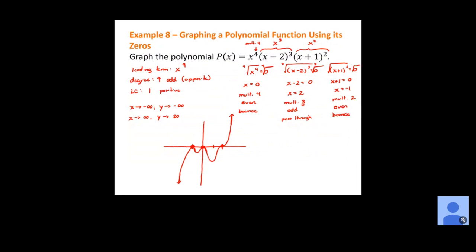In a rough sketch, it doesn't matter exactly where the lowest points are between zero and negative one, or between zero and two. I'm not going to ask you to sketch these by hand since you have access to Desmos. This is more about recognizing how many times zeros occur — there should be nine total, with the first counting four times, the second three times, and the last two times.